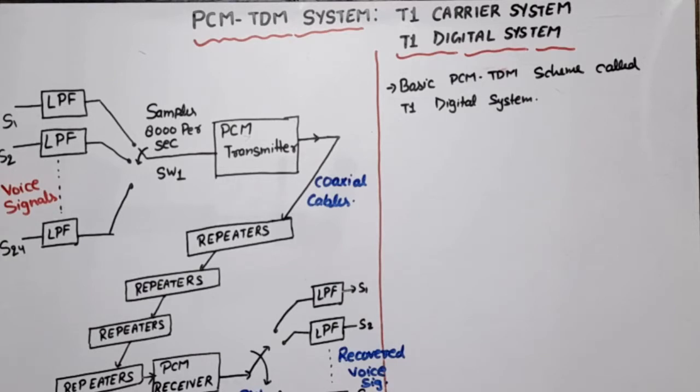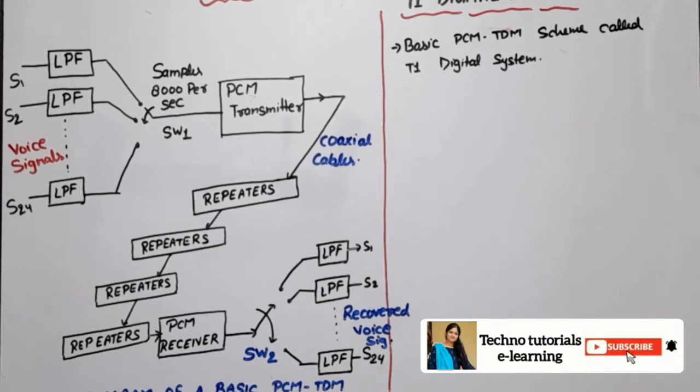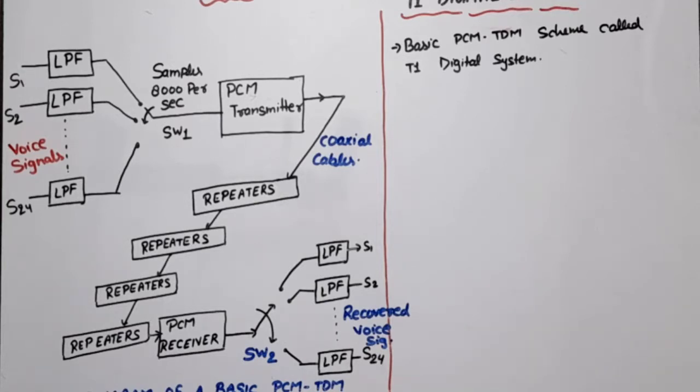This is the block diagram. First of all, we need TDM when we have multiple pulse code modulated signals to transmit through a single channel. In this case, the input signals are fixed - for the T1 carrier system, 24 voice signals are passed through low pass filters. These low pass filters are band limited at 3.3 kilohertz.